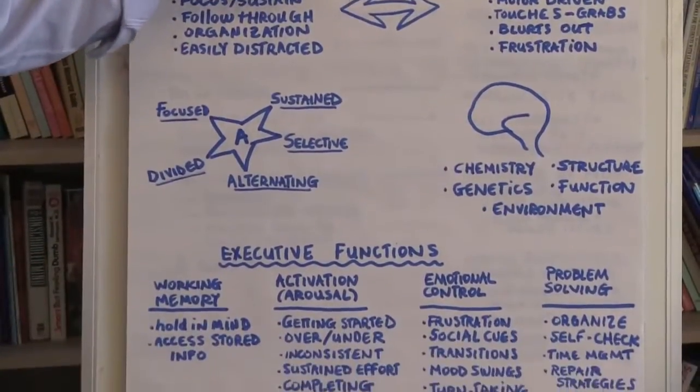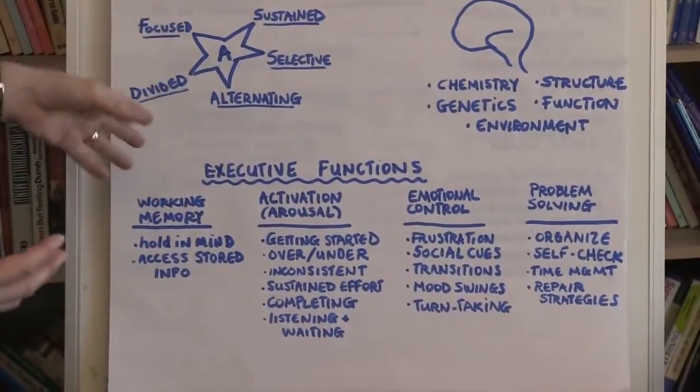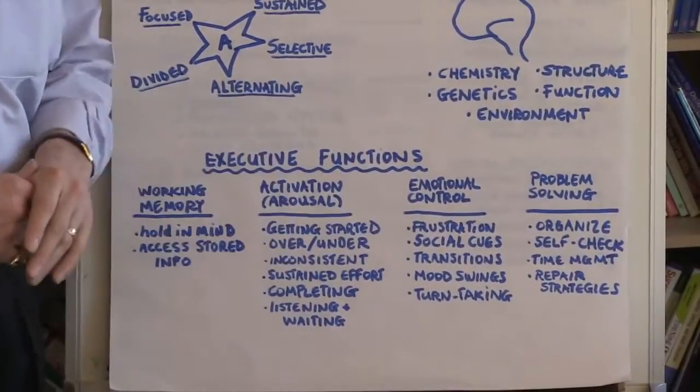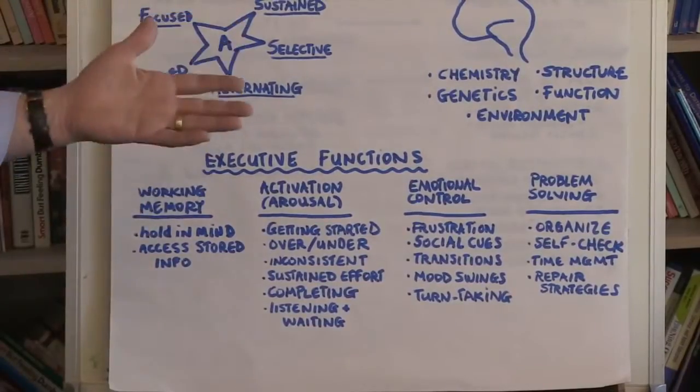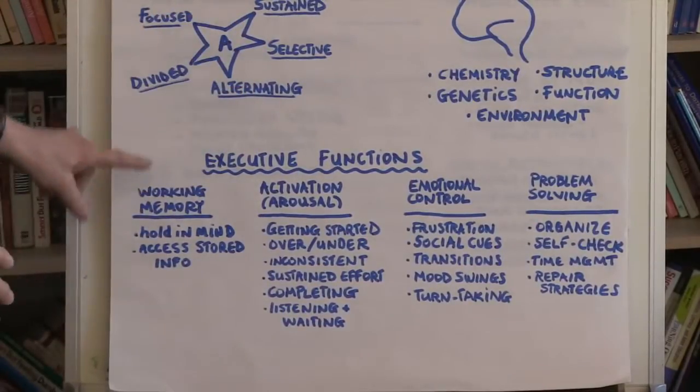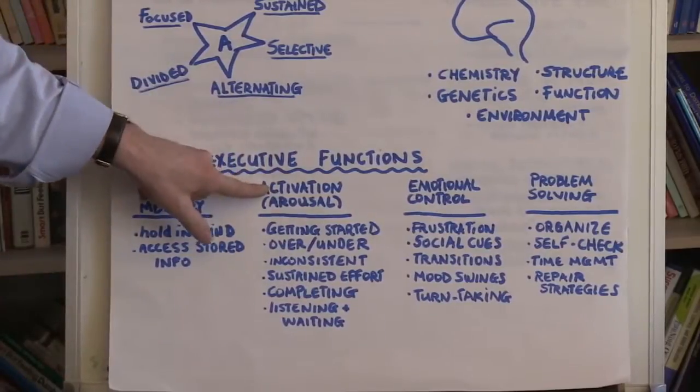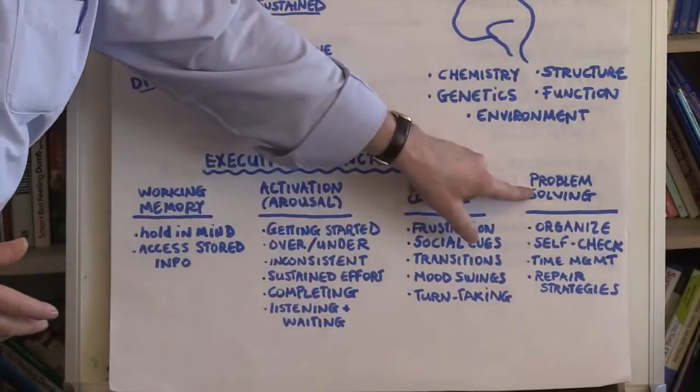One of the things that we absolutely do know is that the behavioral consequences of ADHD manifest themselves in what we refer to as executive functions. So what are some of those executive functions that are hallmarks of ADHD? Well, working memory is one, activation or arousal is another, emotional control is another, and then problem solving.